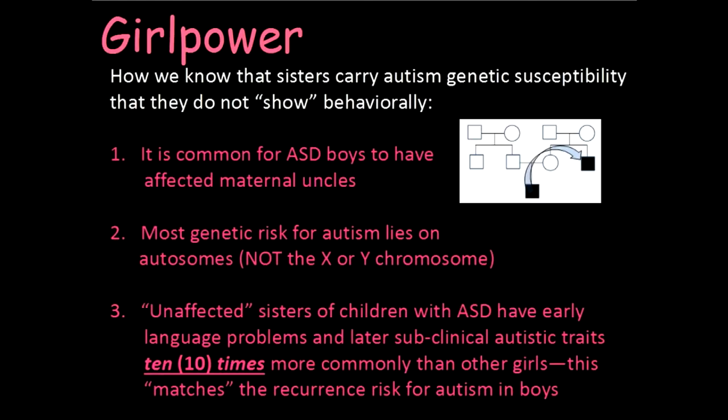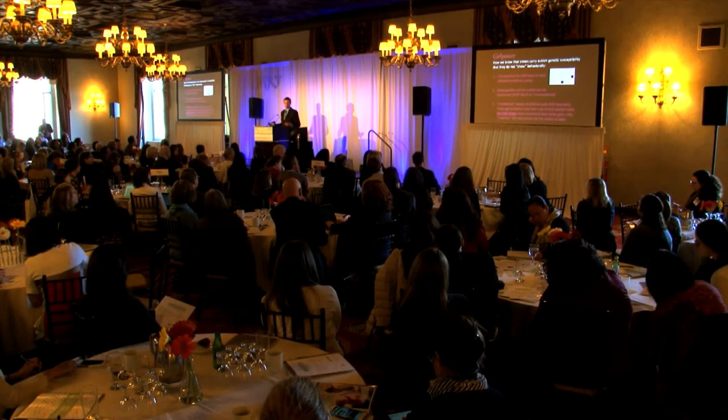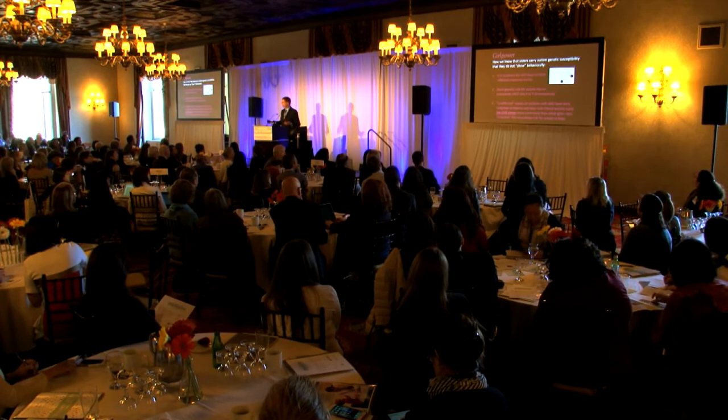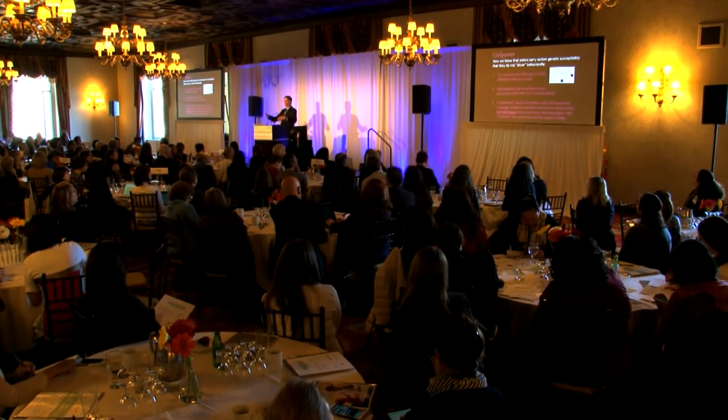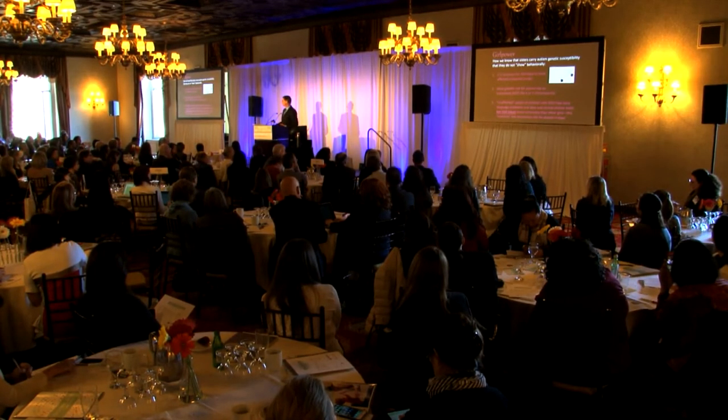The second big clue is about the female protective effect. Girls can hide the manifestation of inherited liability to autism. We know this because it's common for boys with ASD to have affected maternal uncles. Also, most identified genetic risk is on autosomes — non-sex chromosomes — despite a four-to-one male-to-female ratio in autism. And unaffected sisters of children with autism turn out to have early language problems they eventually outgrow, plus subclinical autistic traits at rates ten times higher than other girls. Something is recurring in these families, but it's not autism itself.